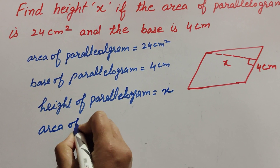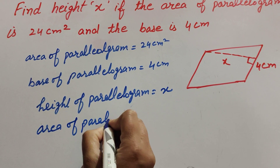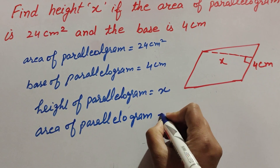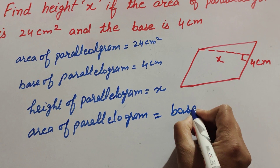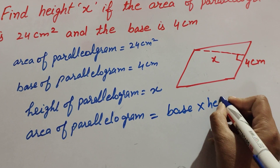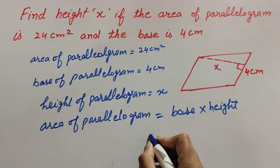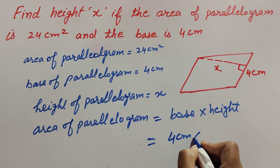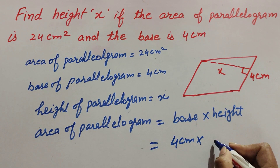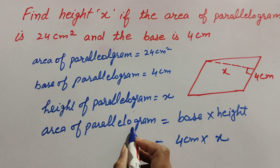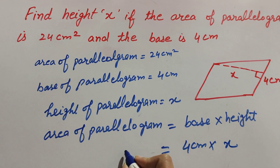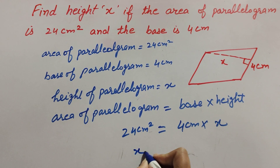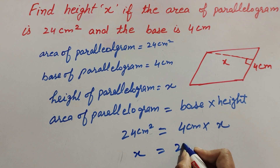We know the formula to find the area of a parallelogram: area of parallelogram is equal to base multiplied by height. Here base is equal to 4 centimeter, height is x that we have to find, and area of parallelogram is 24 centimeter square. So now: 4 times x equals 24 centimeter square.